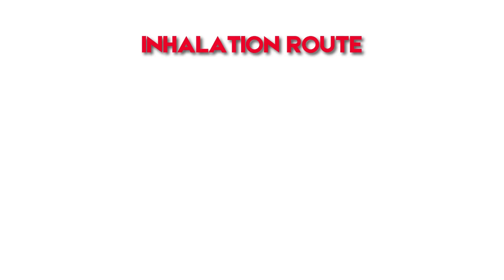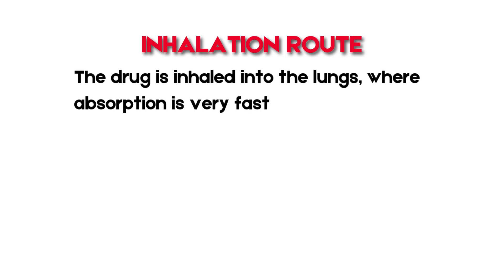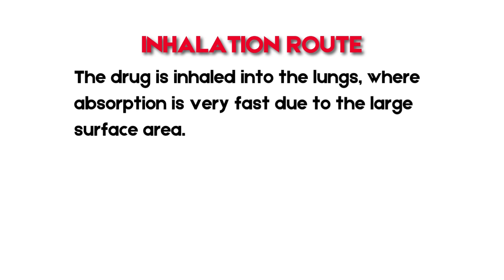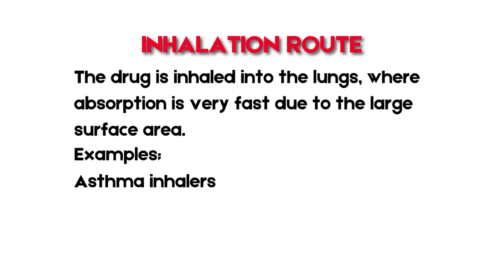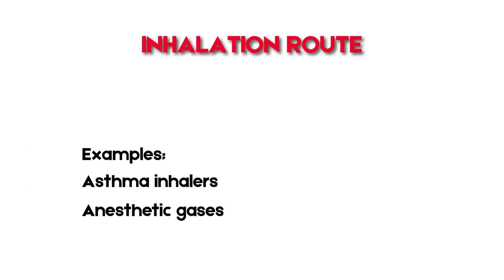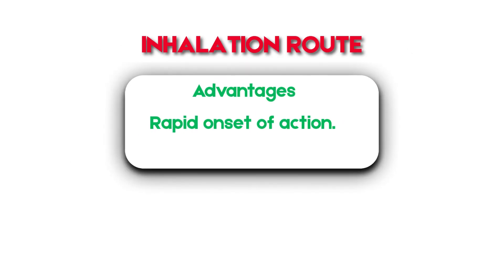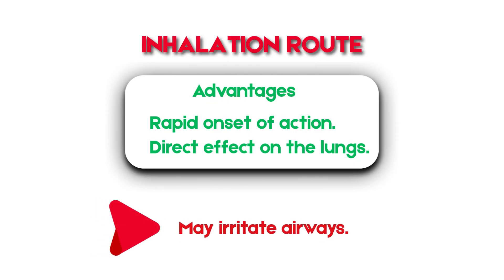Another important route is the inhalation route. Here the drug is inhaled into the lungs, where absorption is very fast due to the large surface area. Examples include asthma inhalers and anesthetic gases. Advantages of this route include rapid onset of action and direct effect on the lungs. However, these medications may irritate airways.